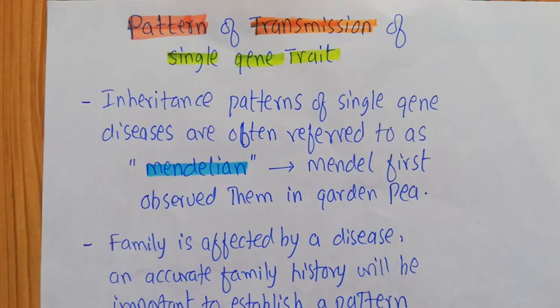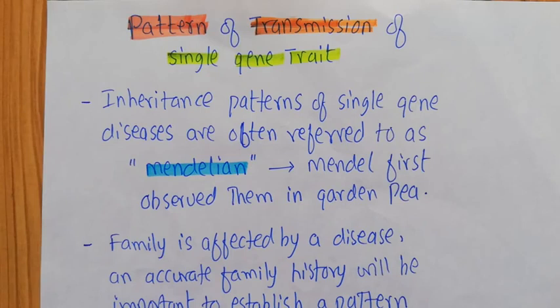When you talk about the inheritance pattern of single gene diseases, they are often referred to as the Mendelian ones. The reason they are known as Mendelian is because Mendel for the first time observed these characters of the single gene pattern in the garden pea. He performed a lot of experiments to establish those particular traits controlled by single genes, including the color of the pea and the height of the pea plant.